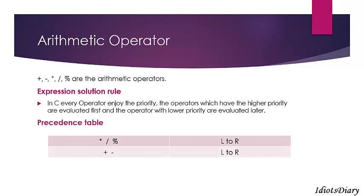According to this rule, a priority table is formed. The priority table for arithmetic operators is given on the screen. The priority of multiply, divide, and modulus is higher than the priority of plus and minus. As well as the priority rule, the association rule is also used while you solve the expression. The association rule says that some operators are executed from left to right, whereas some operators are executed from right to left.